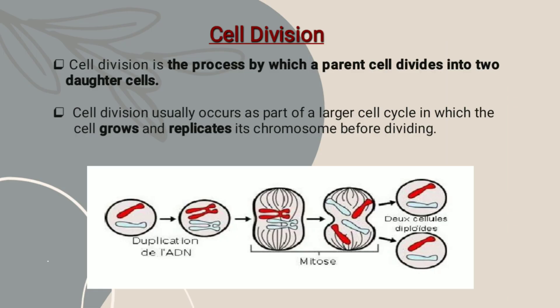So firstly, we should know about what is cell division. Cell division is the process by which a parent cell divides into two daughter cells.